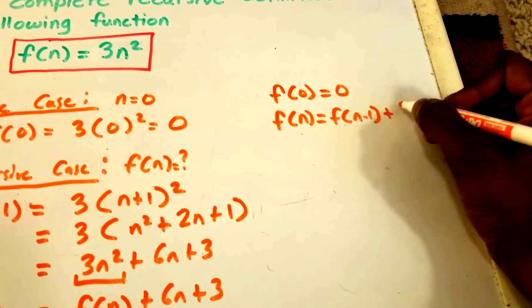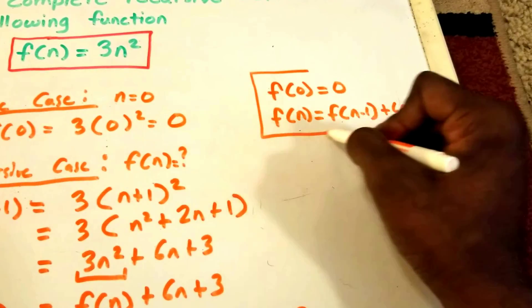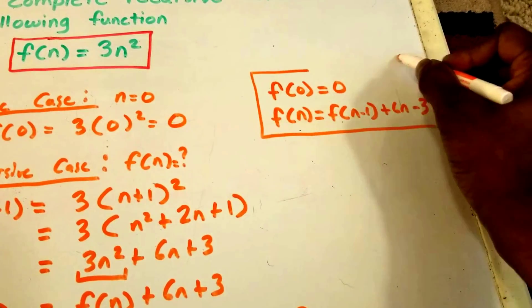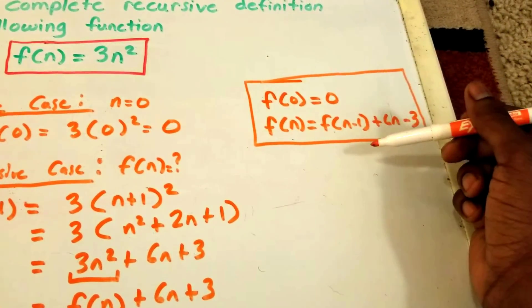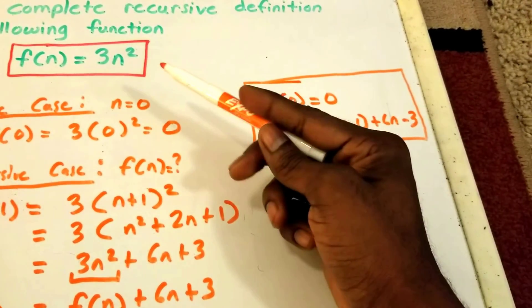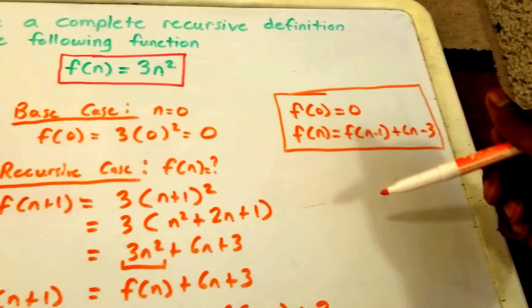And so this is our answer. This is a complete recursive definition for the function f(n) = 3n². So thank you guys, I hope you enjoyed this video. Please let me know if I made any mistakes because I do tend to do that from time to time.